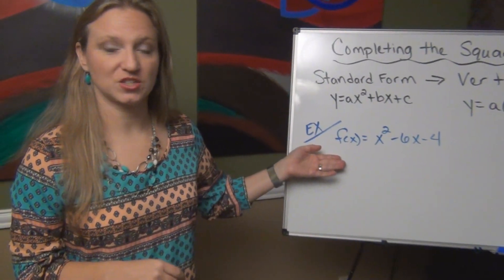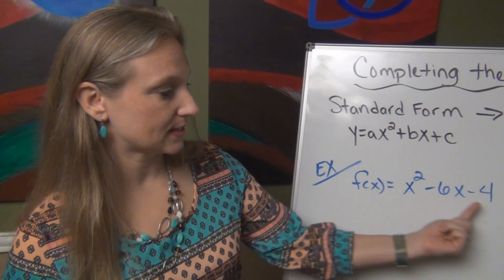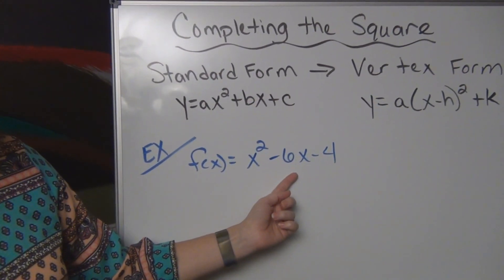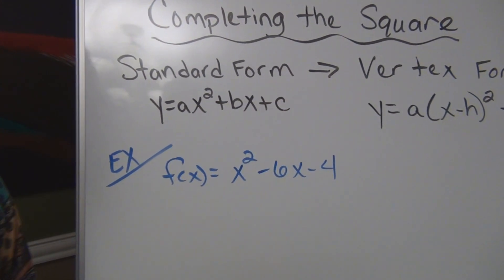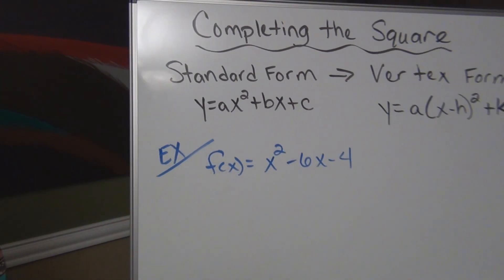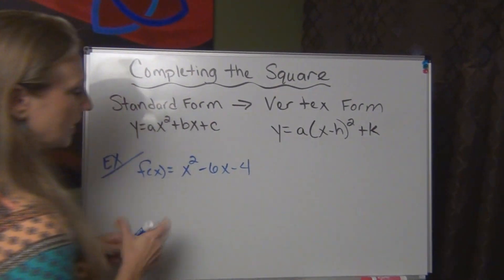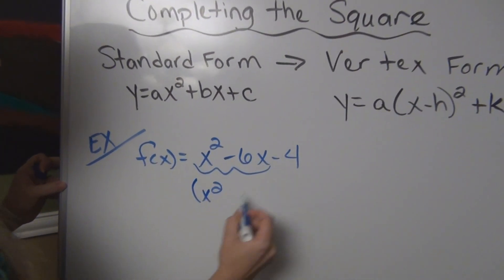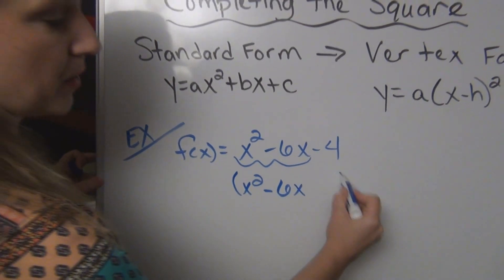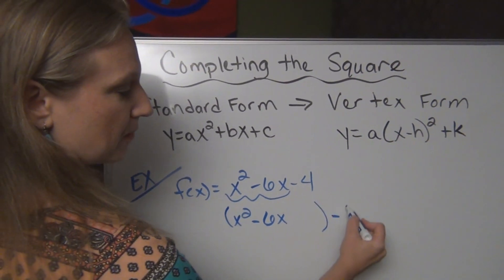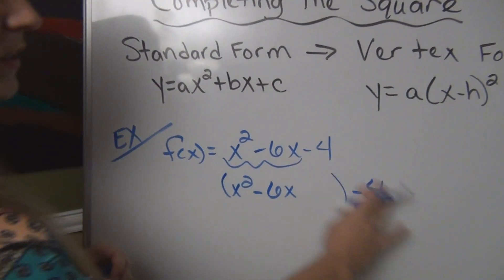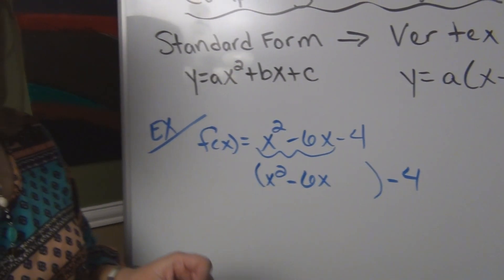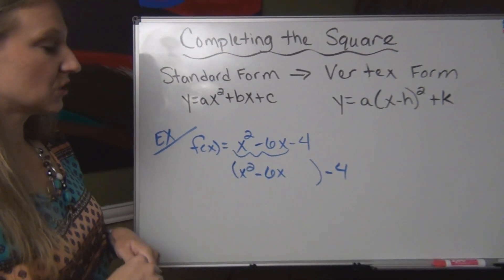So let's say we begin with an equation that looks like this. You can see it's in standard form because it's got its x squared term first, the x term is second, and we have our constant here at the end. So the first step in order to complete the square is we are going to look at just the first two terms of the polynomial. And I'm going to kick that minus four out to the side right now because I don't need it.